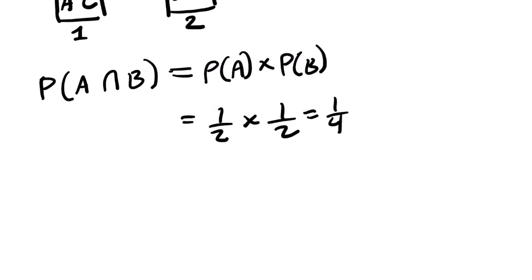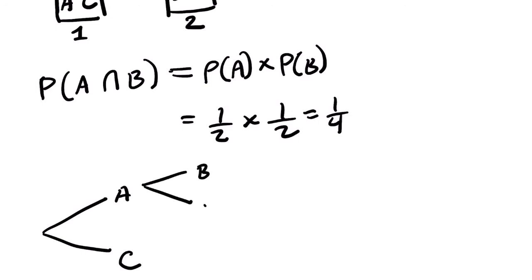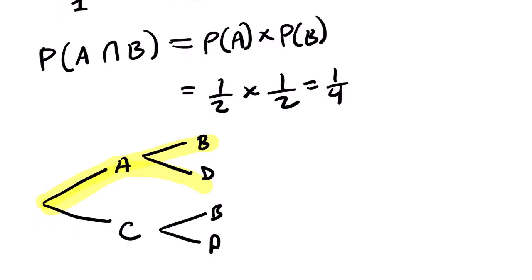We can think of this on a tree diagram too. From the first bucket you can get A or C, and from the second bucket you can get B or D. There are four possible outcomes: A-B, A-D, C-B, and C-D. There is specifically one A-and-B branch out of four, which is our one fourth.